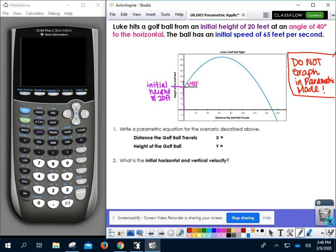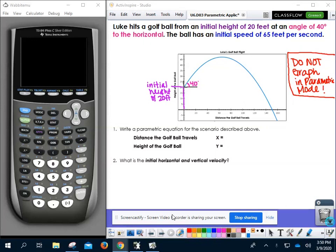So part one says write a parametric equation for the scenario. So we are going to write a parametric equation using the formula that we learned on the previous slide. So what we're going to start with is our x and y equals equations. The x is telling you the distance the golf ball travels, or in other words in this visual that would be the x equals equation. And we're going to start with t, our parameter. t is multiplied by the initial velocity. And in this case, our initial speed is 65 feet per second. Then we're going to multiply this by cosine of the direction angle. And our direction angle, in this case, that's the angle to the horizontal. That's 40 degrees. So there's our x equals equation.